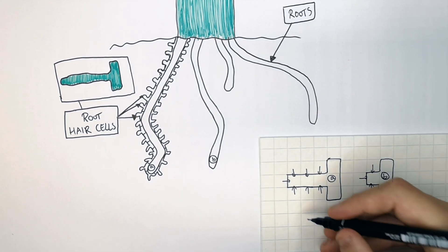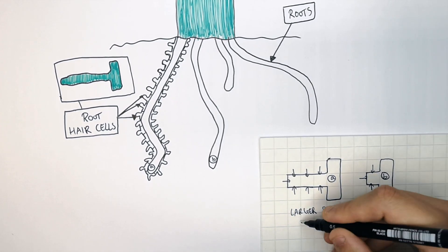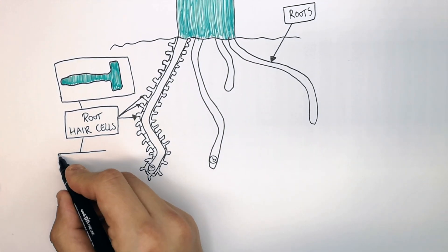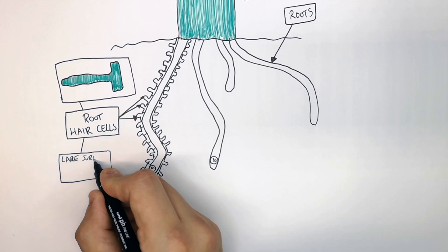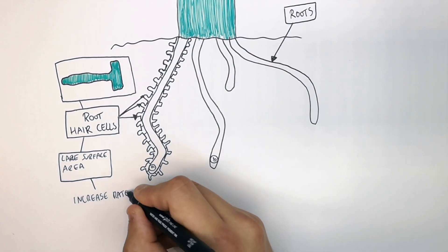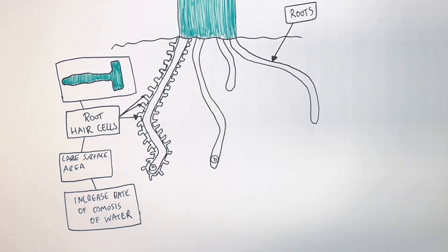So having a larger surface area means absorption happens more quickly. A smaller surface area means absorption happens more slowly. So root hair cells, their adaptation is a large surface area which acts to increase the rate of osmosis of water as well as diffusion and active transport.